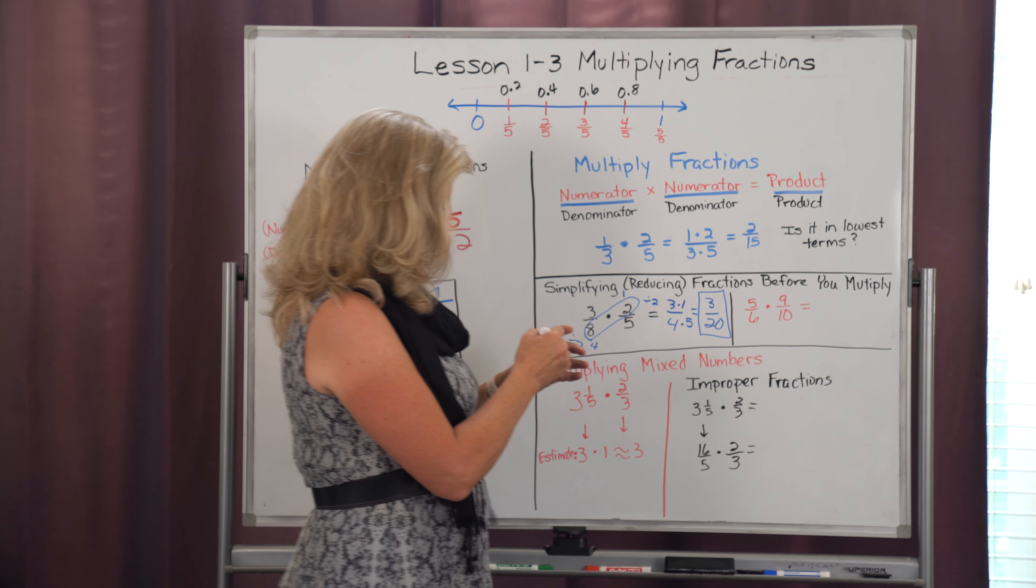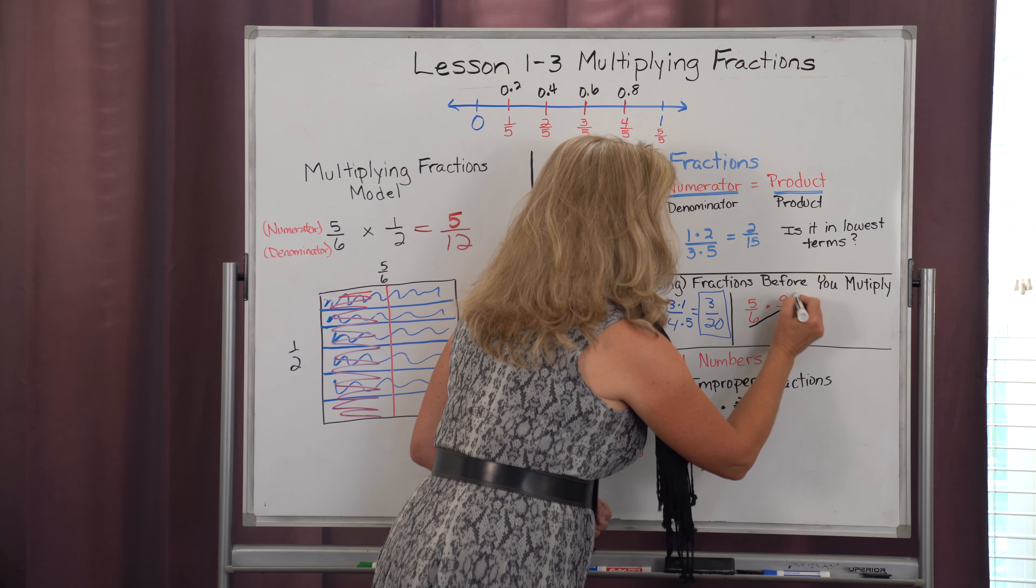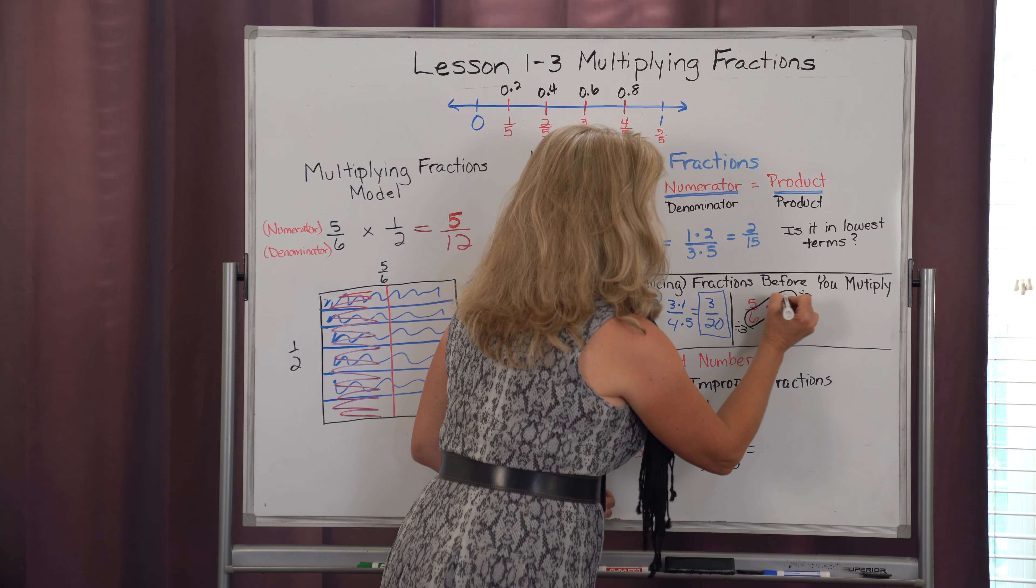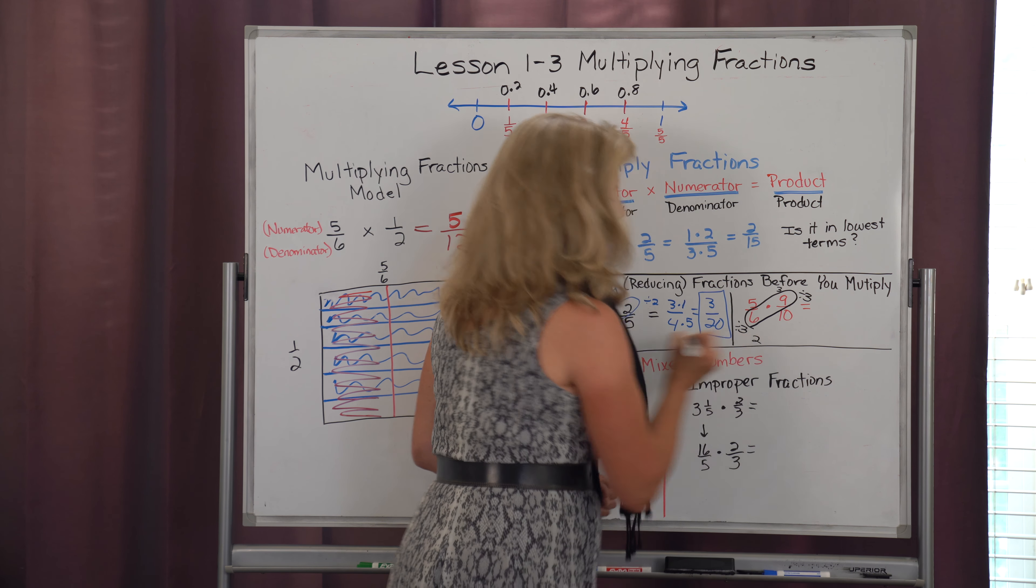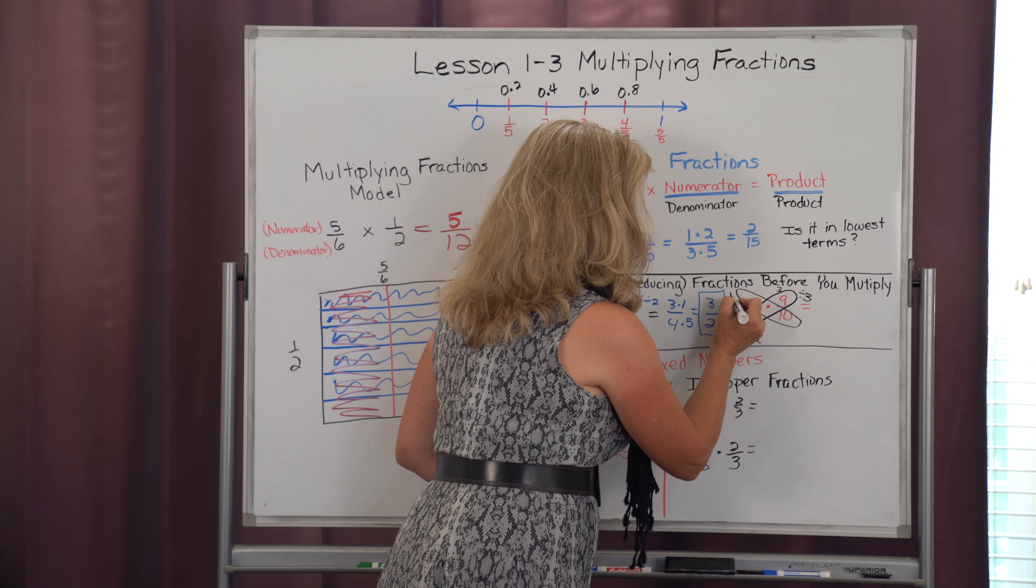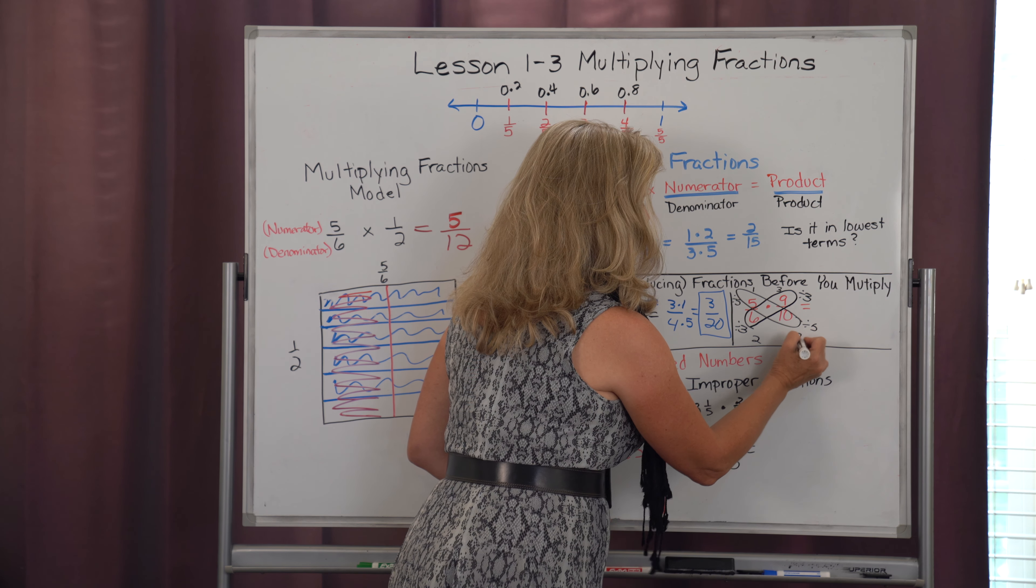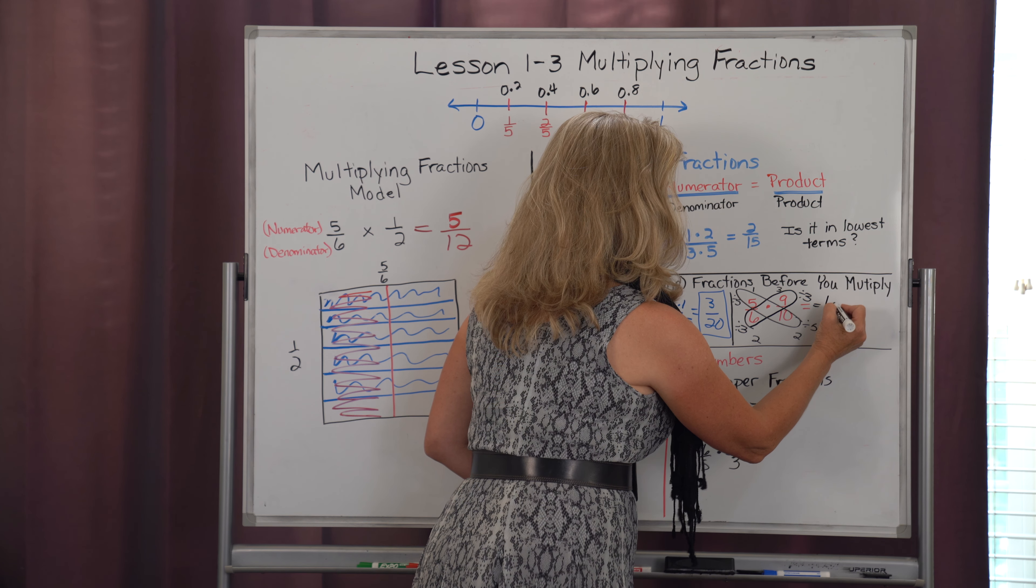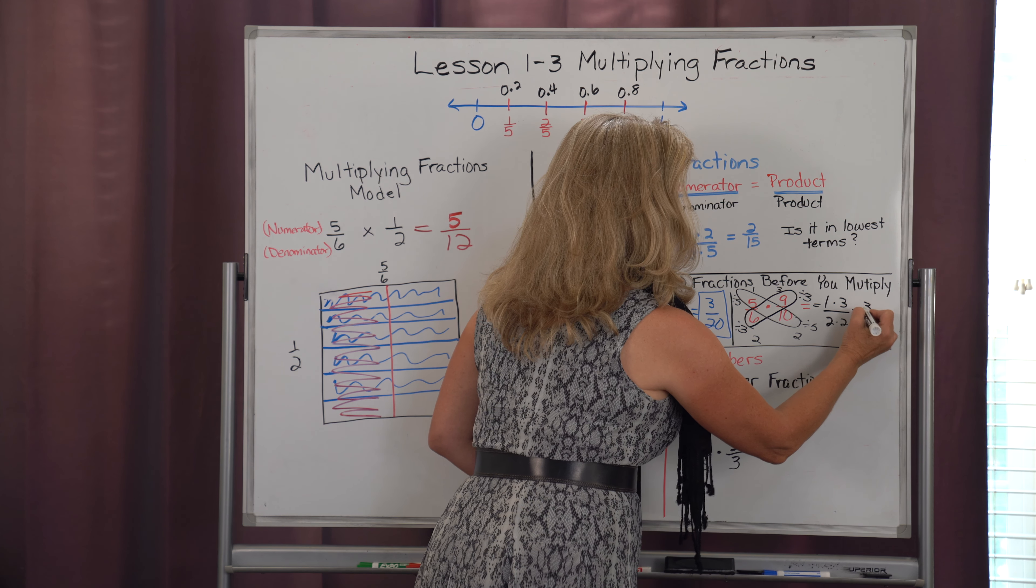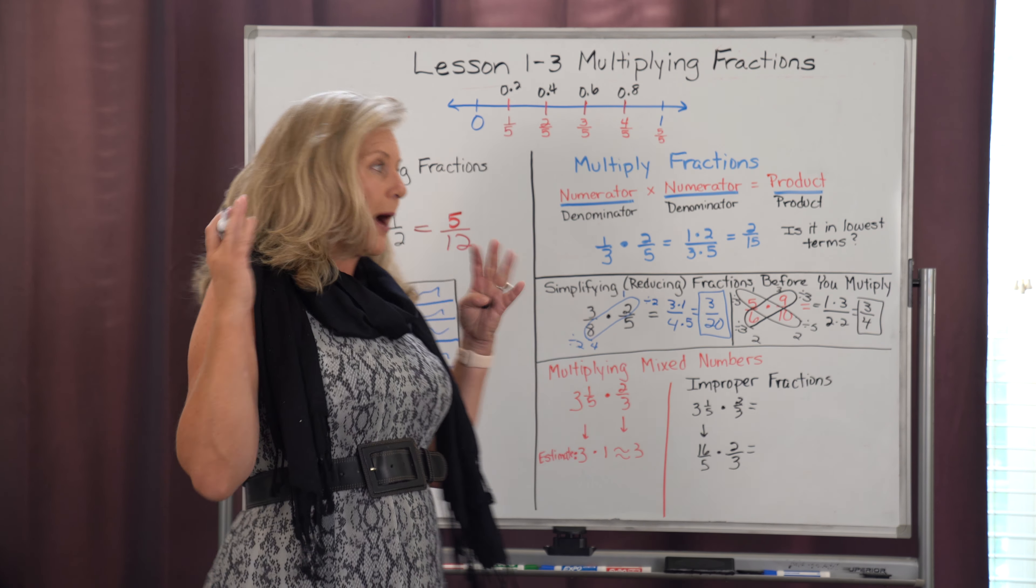Now, sometimes it works on both diagonals. So let's take a look at one that has two diagonals. So I'm going to look at 6 and 9. And I know I can divide 3 into both of those. 9 divided by 3 is 3. 6 divided by 3 is 2. And then I'm going to look at 5 and 10. And this one I can actually reduce. Because 5 divided by 5 is 1. 10 divided by 5 is 2. So it actually becomes 1 times 3 over 2 times 2. And that becomes 3 fourths. And that's my final answer. Already reduced. So I love that, because most people forget to reduce to lowest terms.